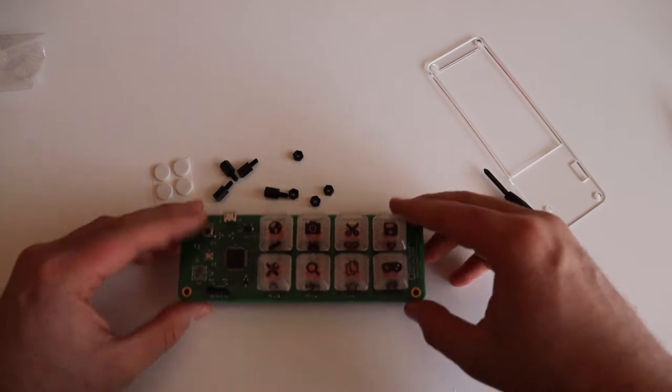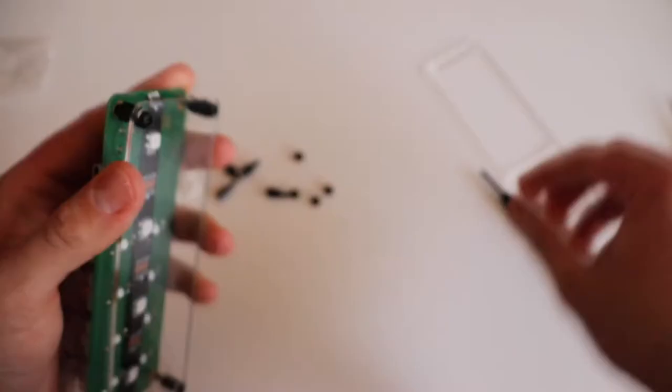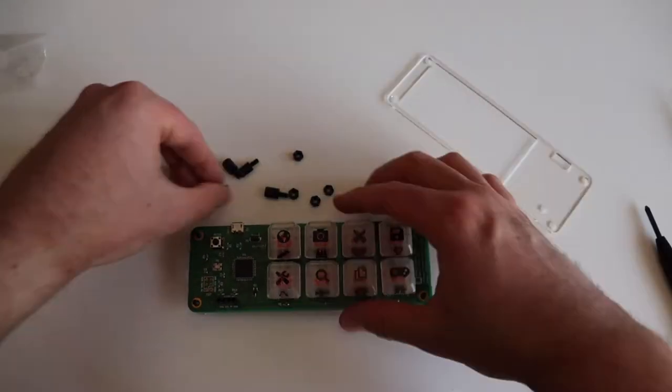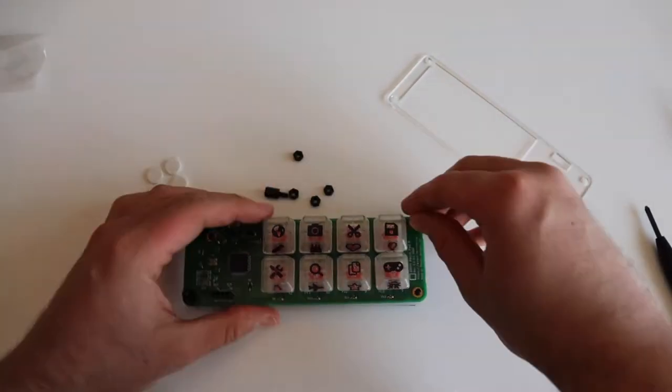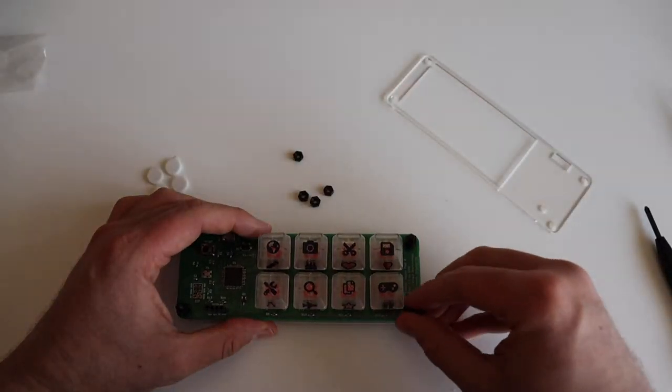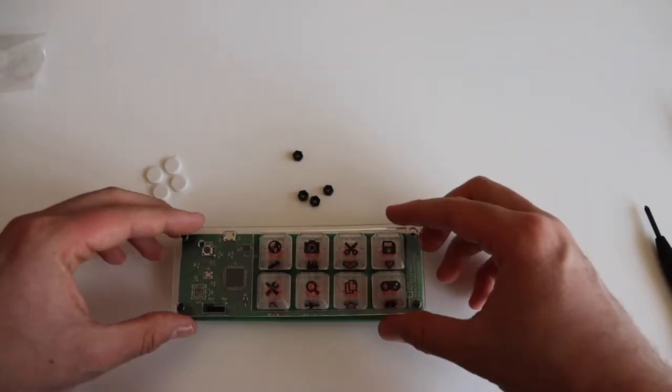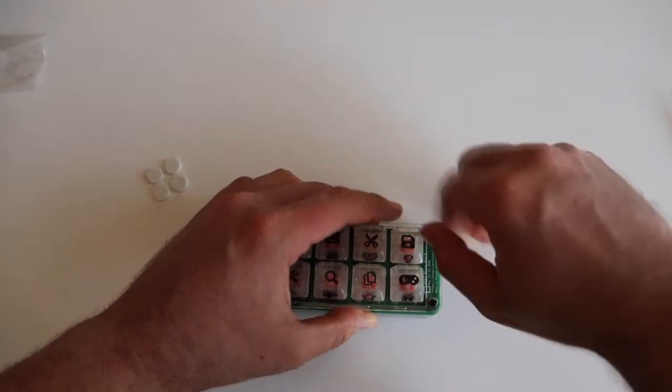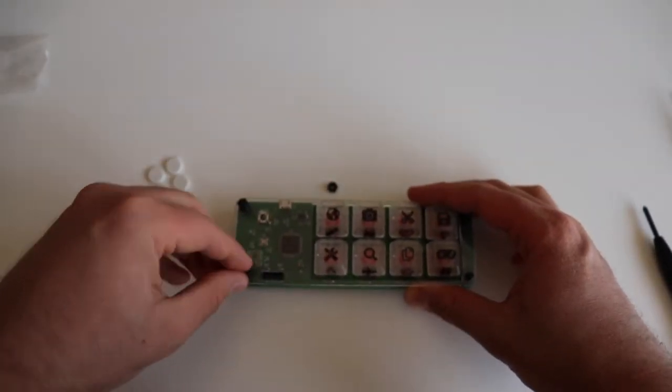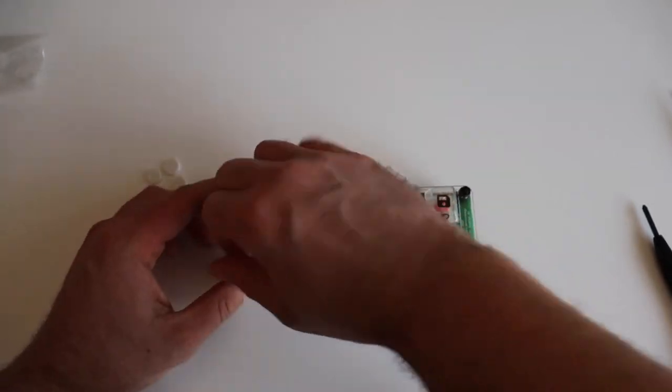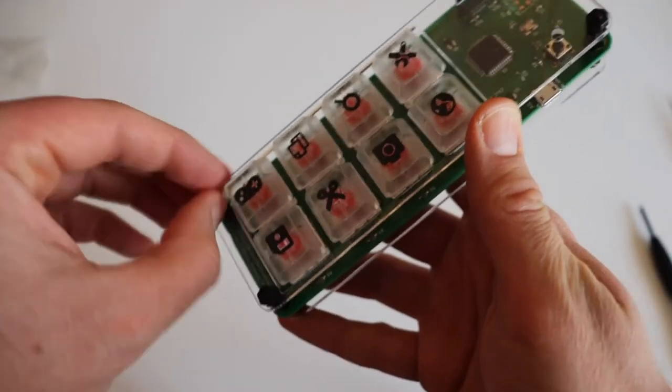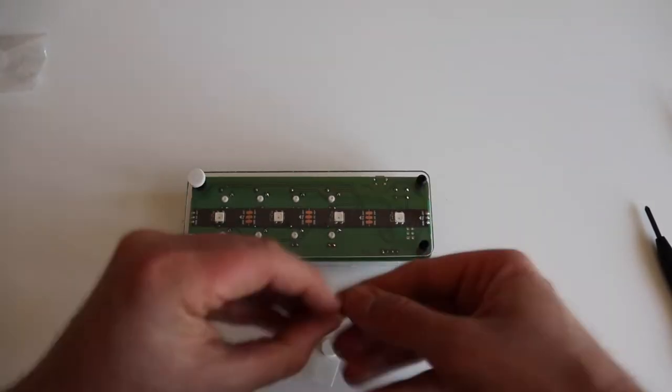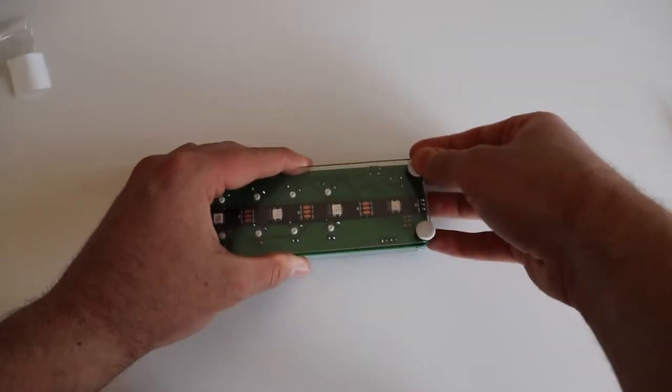Place 4 of the standoffs with screws to the bottom acrylic part. After that, place ANAVI MacroPad 8 on top of them. The printed circuit board has 4 mounting holes for this purpose. Add the rest of the standoffs on top to secure the board to the bottom part as shown in the video. Place the top acrylic part and fasten it with the 4 M3 nuts. Finally, add the silicon protective pads to the screws on the bottom.